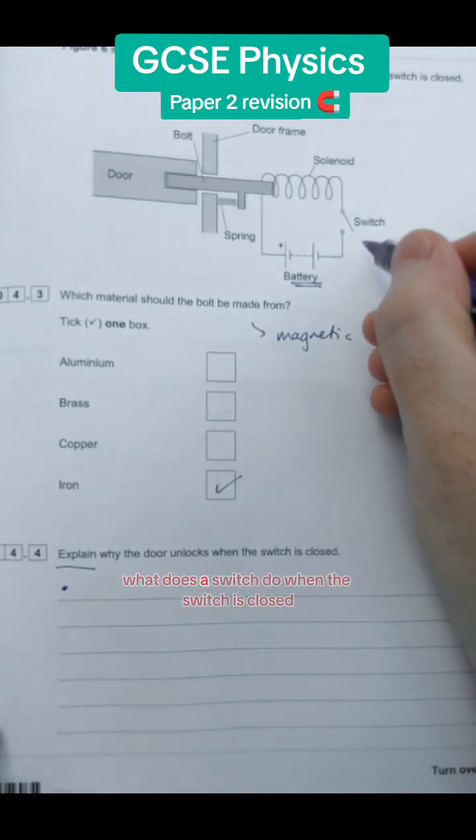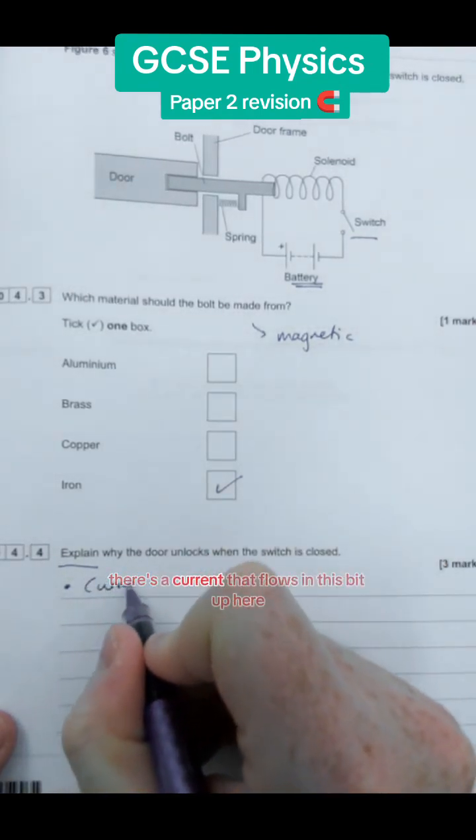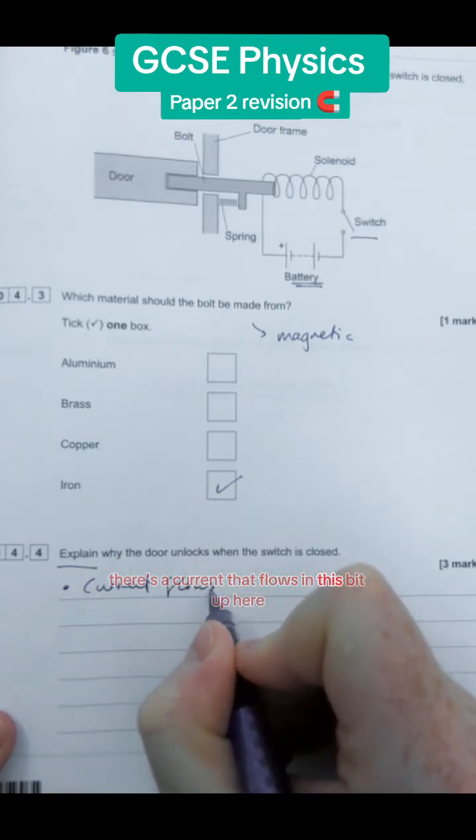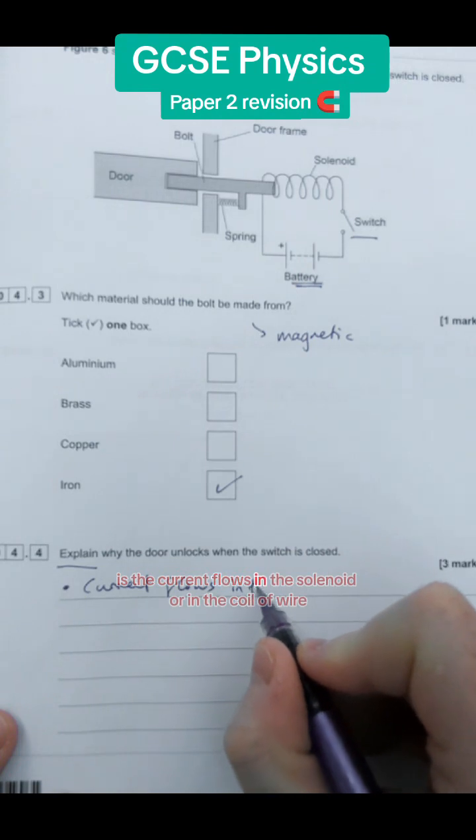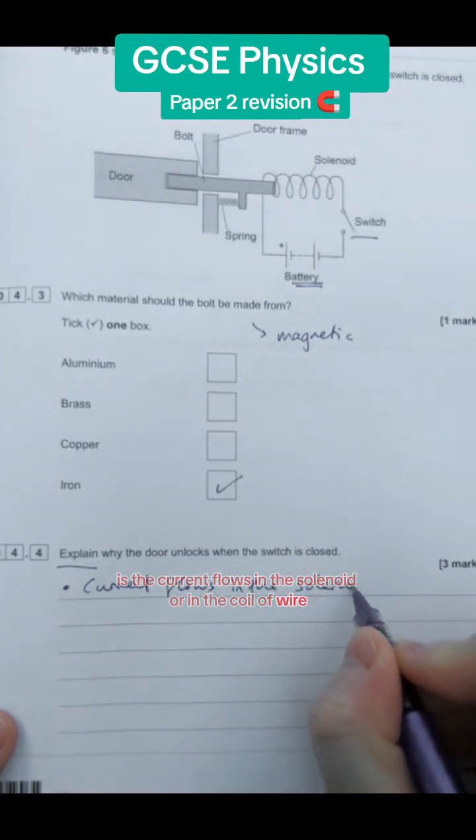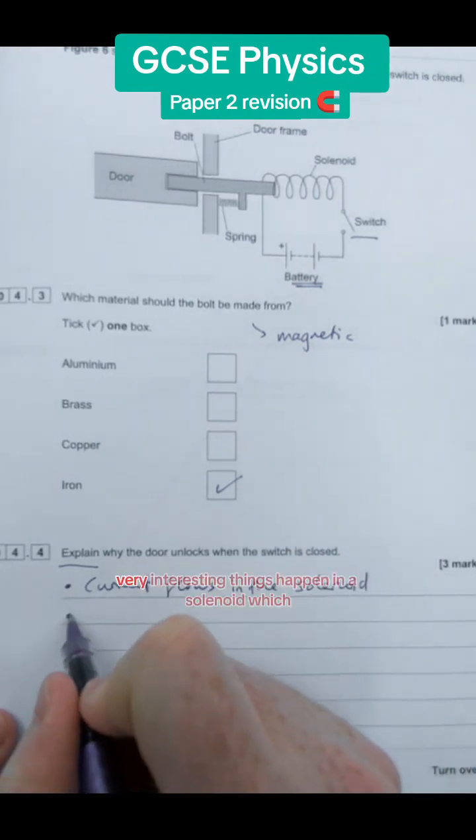So let's explain why the door unlocks when the switch is closed. Well the first thing is what does a switch do. When the switch is closed there is a current that flows in this bit up here, the whole circuit really. But the bit we're interested in is the current flows in the solenoid or in the coil of wire.